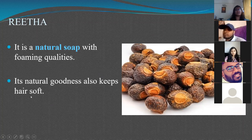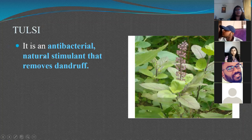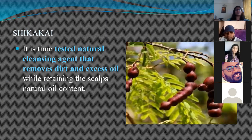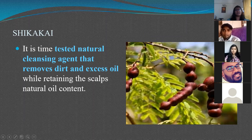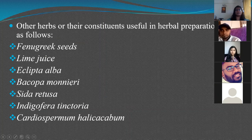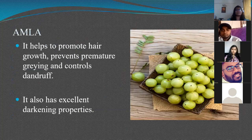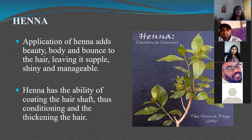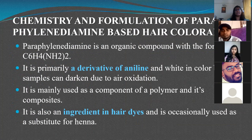Soap nut or rita has foaming qualities that cleanse the hair and keep it soft. Tulsi (basil) has antibacterial properties and acts as a natural stimulant to remove dandruff. Shikakai is an old, time-tested natural cleansing agent that removes dirt and excess oil while retaining the scalp's natural oil content. Other herbs used in herbal preparations include fenugreek seeds and lime juice, all used alongside aloe vera, shikakai, tulsi, rita, hibiscus, amla, henna, and aloe vera for different hair care purposes.